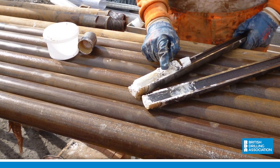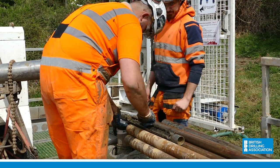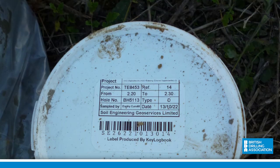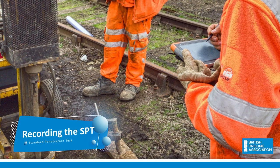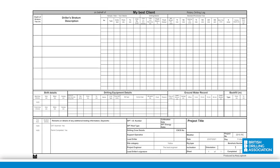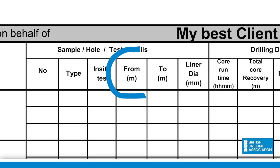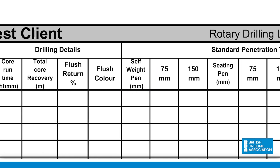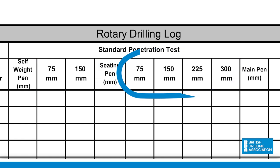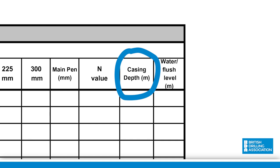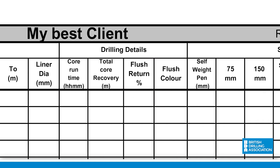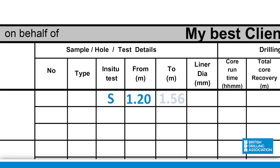When a split spoon is used, a small disturbed sample — a D sample — is obtained. This should then be placed into a tub or jar and correctly labelled. The driller's log or data collection program must have boxes to allow the driller to recall all of the following information. The test should be recorded for the actual depth penetrated and the N value. If a sample has been recovered in the split spoon, then this should be recorded as a separate small disturbed sample over the depth range of the test.